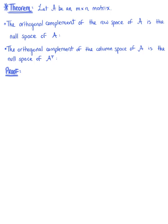The first thing it tells us is that the orthogonal complement of the row space of matrix A is, in fact, equal to the null space of matrix A. The second thing is that the orthogonal complement of the column space of matrix A is, in fact, equal to the null space of the transpose of matrix A.